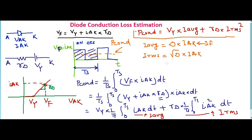If you have a given design where the diode is operating with a square pulse waveform and you want to calculate the conduction loss, the conduction loss is given by: Vγ · IAverage + RD · IRMS², where Vγ is the cut-in voltage and RD is the dynamic resistance.